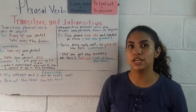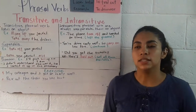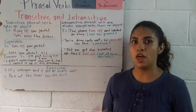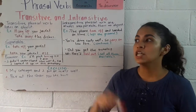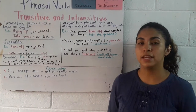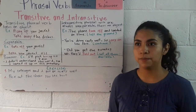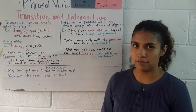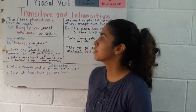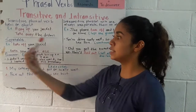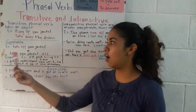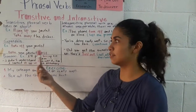In the case of a transitive phrasal verb, we can put the object between the verb and the adverb or preposition, or we can put it after. Here we have some examples. 'Take off your jacket.' Take off is the phrasal verb and jacket is the object. In this case, the object goes after the phrasal verb.